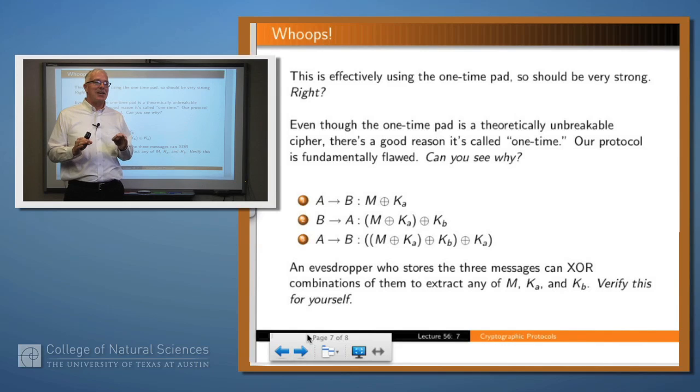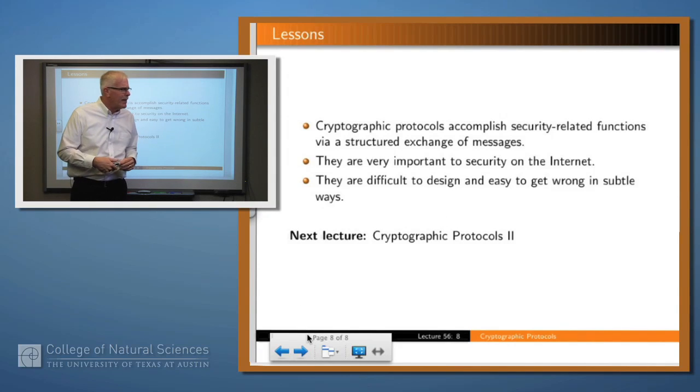Well, this you might think is effectively the one-time pad, and so should be pretty strong encryption algorithm. The problem is there's a good reason why you call the one-time pad one time, and that is if you use the encryption method with the key several times, then you immediately lose all of the strength of the one-time pad. So the problem with this protocol is that an eavesdropper who collects all three of these messages is able to extract not only M, but K and K sub B just by XORing these messages together, because anytime you see a value being XORed in there, if you see it twice, then it cancels out. And so this really is a very bad protocol, even though at first blush, it appears like it might be a pretty good one.